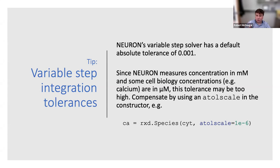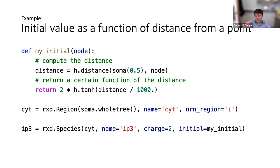You can specify an atol_scale — how calcium should be scaled for variable-step simulations. Voltage was scaled by a factor of 10, some things by 0.1. Calcium is normally in nanomolar range, even though NEURON uses millimolar for concentrations. So setting an atol_scale of around 10 to the negative 6 is appropriate. Initialization is extraordinarily important in understanding how the simulation proceeds — it's an initial value problem, and you can specify the initial value as a function of distance from a point, spatial position, or as a constant.